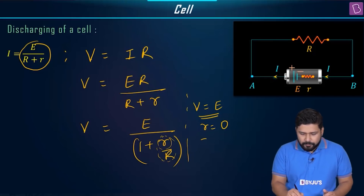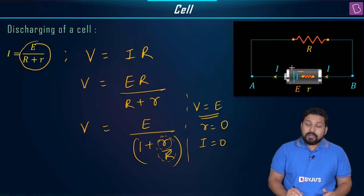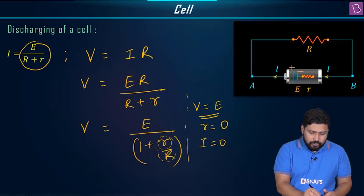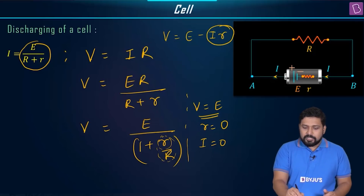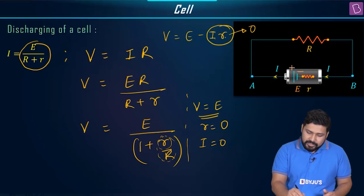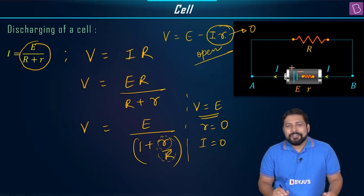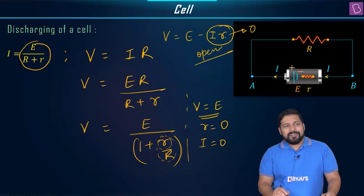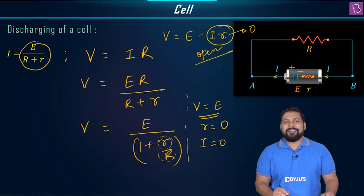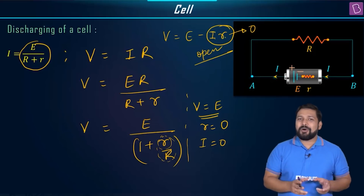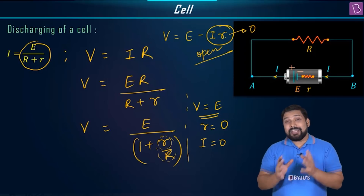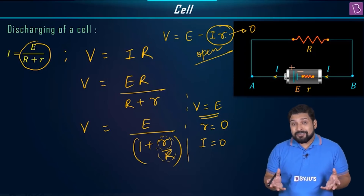The other case is when current I equals 0. From V = E − Ir, if I = 0, then Ir = 0 and V = E. This is the case of an open circuit. So whenever they say 'terminal potential when the circuit is open,' they are talking about the EMF. This is the key takeaway.